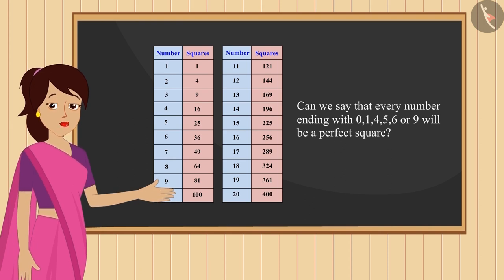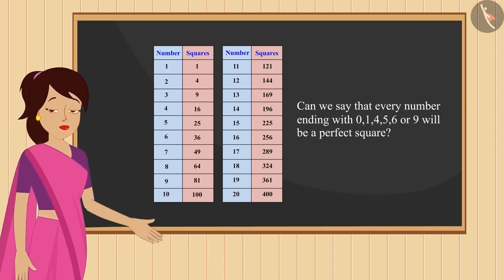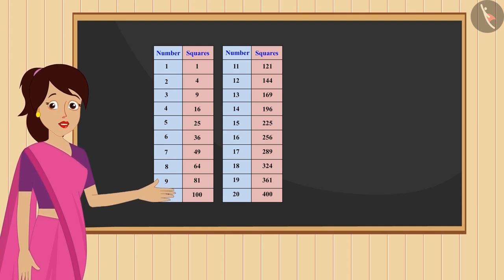But can we say that every number ending with 0, 1, 4, 5, or 9 will be a perfect square? Come on, let's examine some such numbers. Take a look at these numbers.